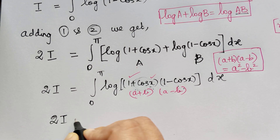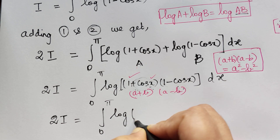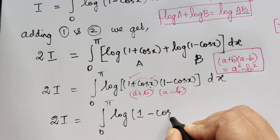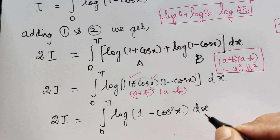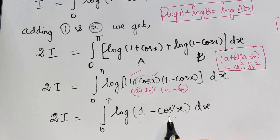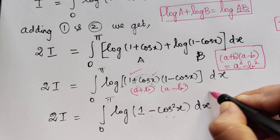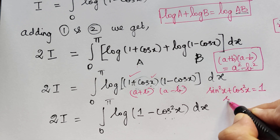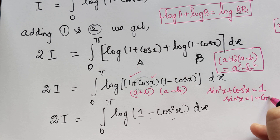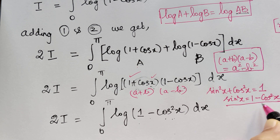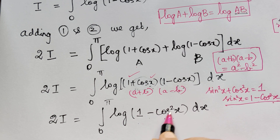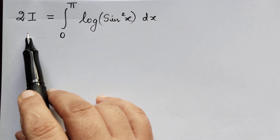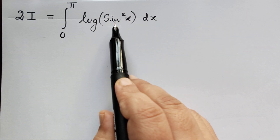So 2I equals the integral from 0 to pi of logarithm of (1 minus cos squared x) dx. From trigonometry, we know that sin squared x plus cos squared x equals 1, so 1 minus cos squared x equals sin squared x. Replacing 1 minus cos squared x by sin squared x, we get 2I equal to the integral from 0 to pi of logarithm of (sin squared x) dx.